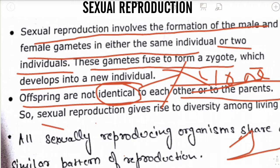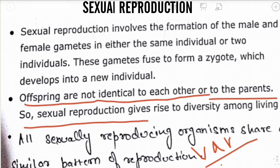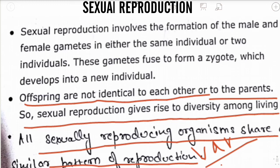Sexually reproducing organisms produce variations. Variation refers to the difference between the parents and the progeny. Because offspring are not identical to each other or to their parents, this leads to diversity among living organisms. All sexually reproducing organisms share a similar pattern of reproduction.